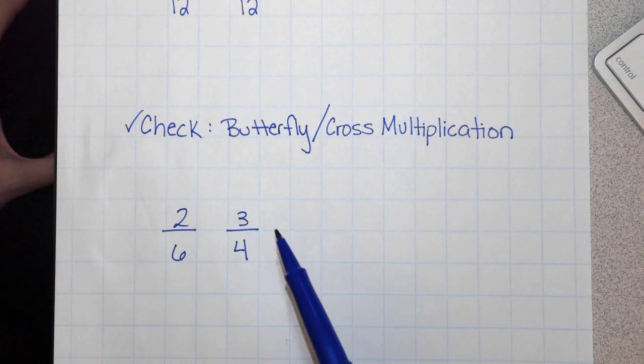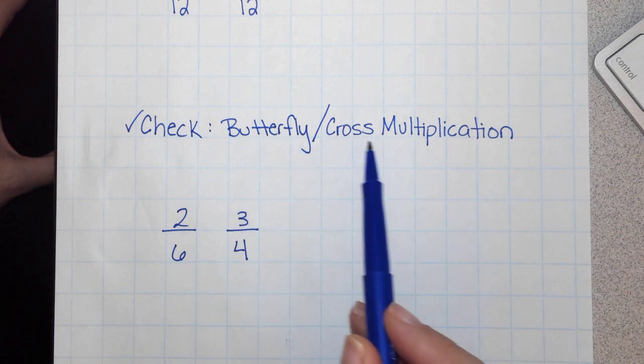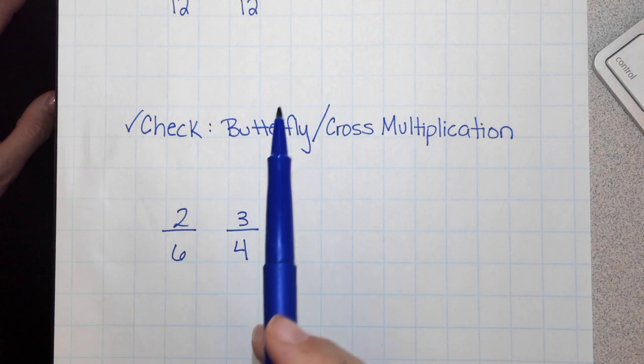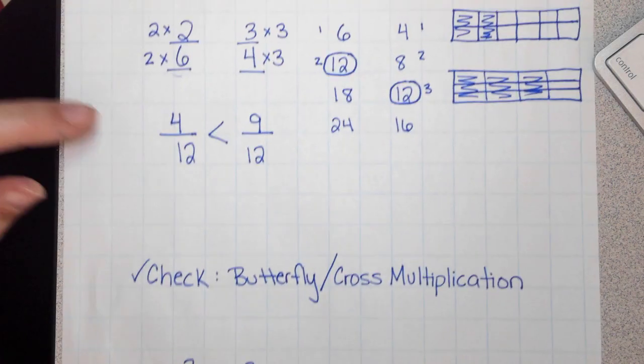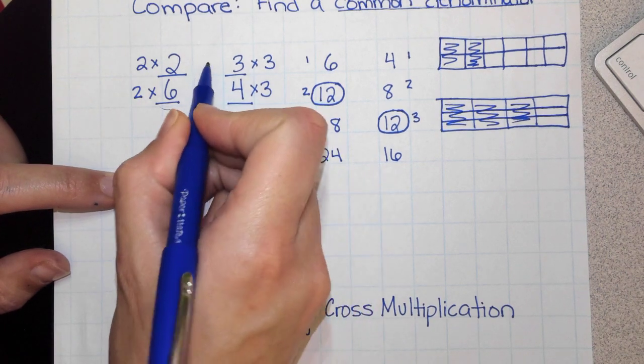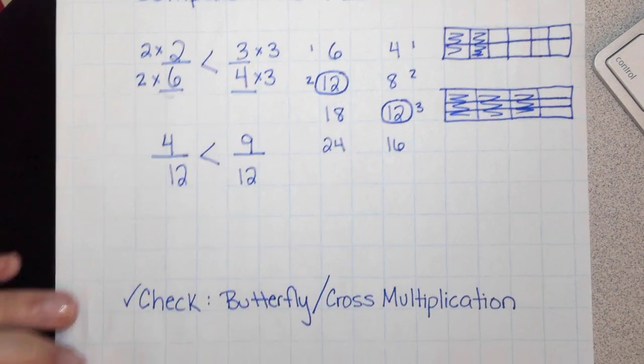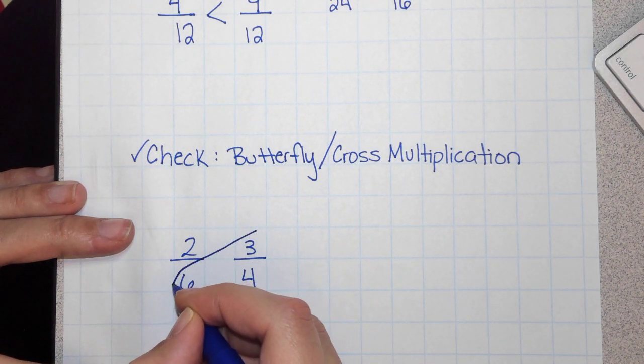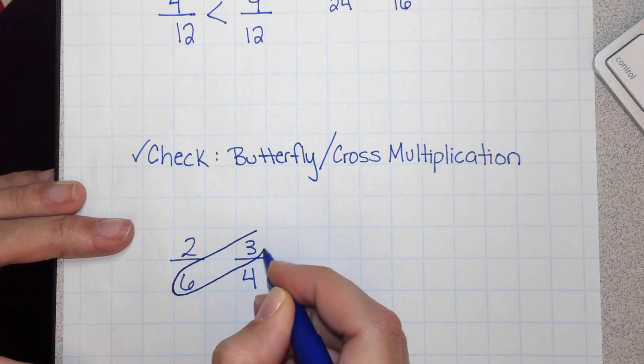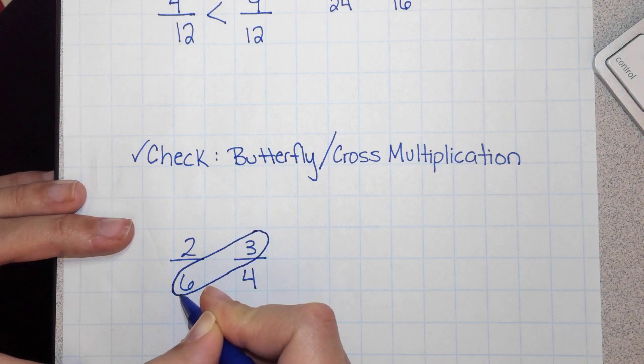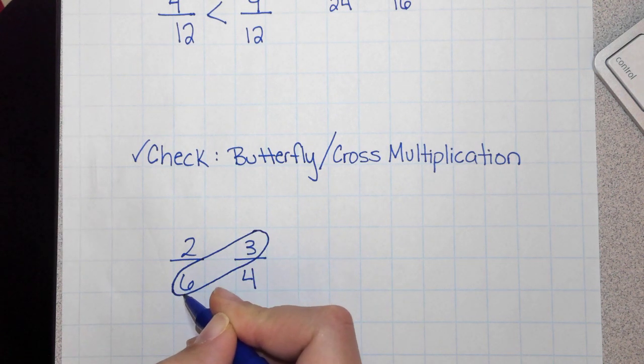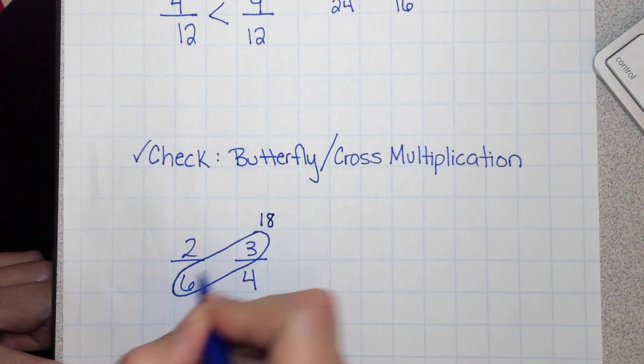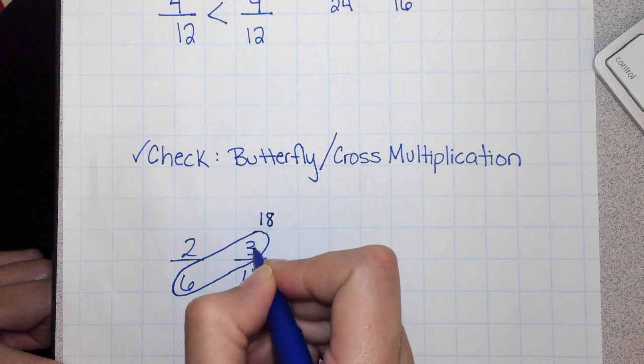So another strategy we can use to compare is called butterfly or cross multiplication. We're going to use it today to check our answer to make sure that 3 fourths is actually greater than 2 sixths. So we're going to start by circling 6 and 3. I'm going to take the numerator from this one and the denominator from this one and multiply them. 6 times 3 equals 18. So I'm going to then put the product on top of the numerator.